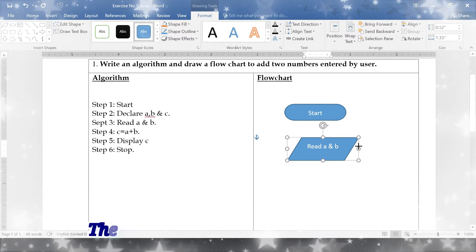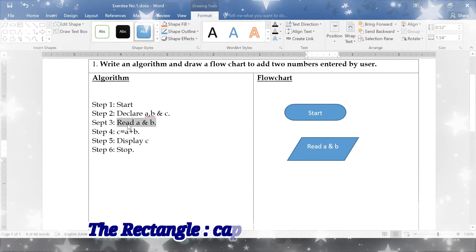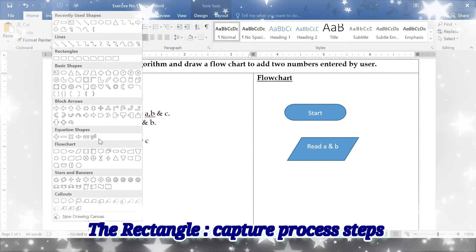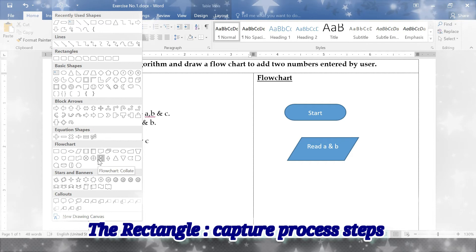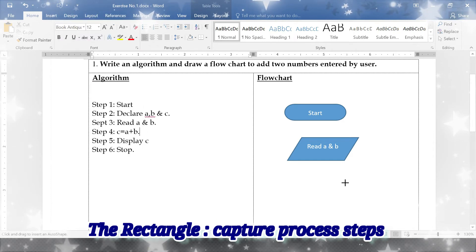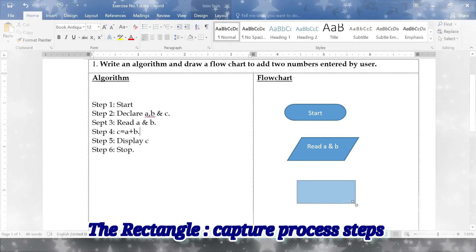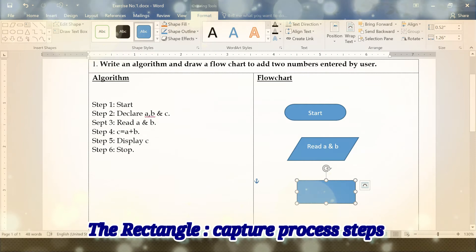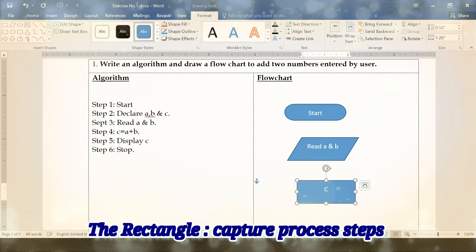What is the next step? Calculate. If you want to calculate, what symbol do you have to use? You have to use rectangle. Right click, add text. Step four is c equal to a plus b.